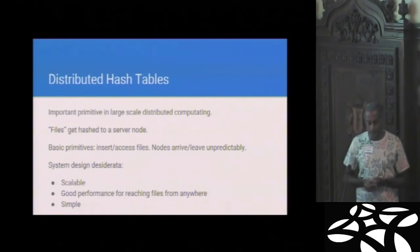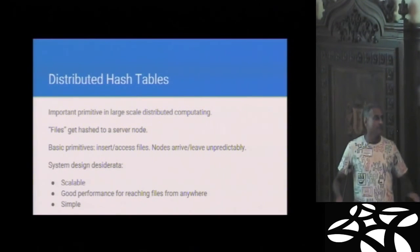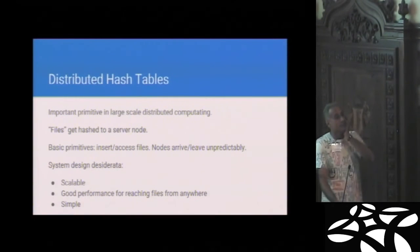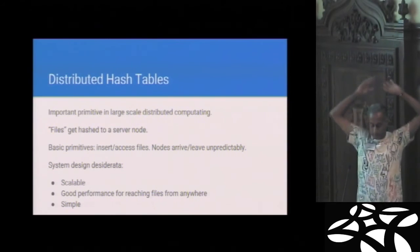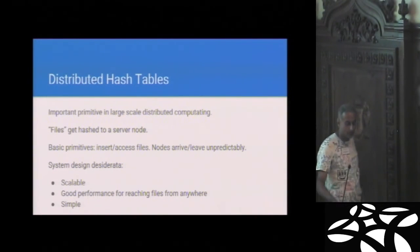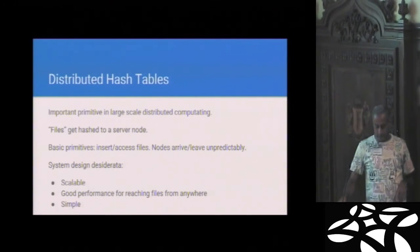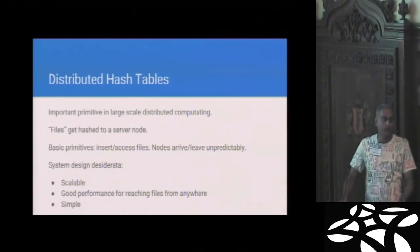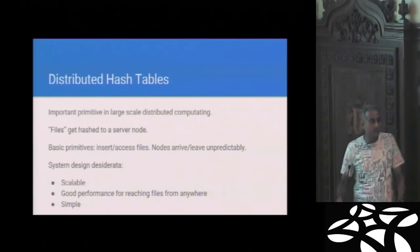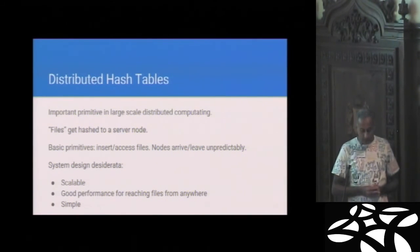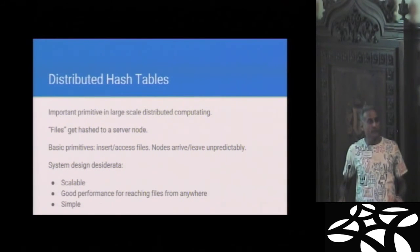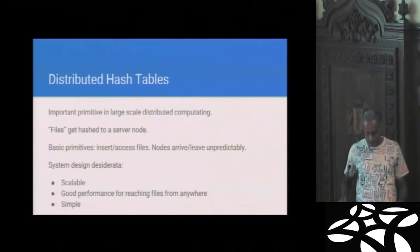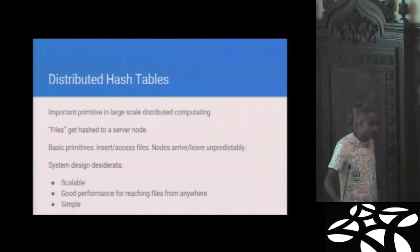So what are DHTs? They're an important primitive in large scale distributed computing. So you get these objects, call them files, and they get mapped to a server node. So you have these things called files. Think of them as lots and lots of them. You have lots of these nodes called servers. They're connected up. Servers sit in data centers. The basic primitives that you want to access files. You want to create files and nodes arrive and leave unpredictably. So servers can die. And system design calls for a few things. First, you want this to be scalable. You want it to be extensible. You want good performance for reaching files from anywhere. And you want this to be simple. Something that when it starts to break, you can quickly diagnose and get back in shape.